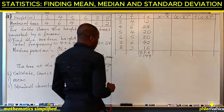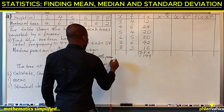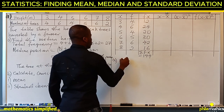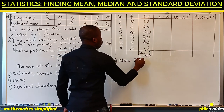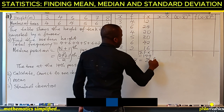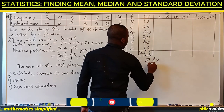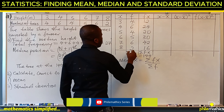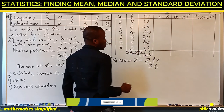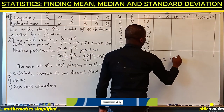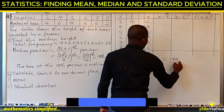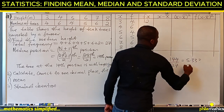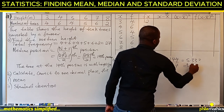The summation of fx is 144. The mean is given by the formula: summation of fx over summation of f, which is n. Since summation of f is 27, the mean is 144 over 27, which gives us 5.333, approximately 5.3.